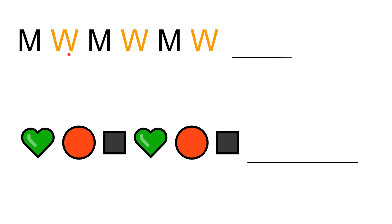These patterns are repeated again and again. Now if I have to guess what will come after W, I will go back to the first pattern and see what came after W. So we have W, then M, then W. So what is coming after W? It is M.